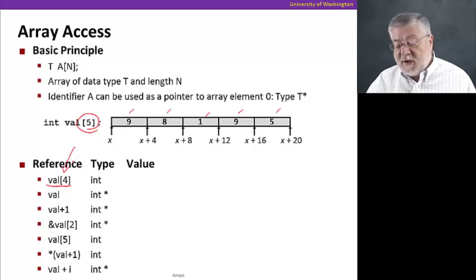Although here we put a five for the total number, the actual index of the last element of the array is N minus one, val sub four. Its type is going to be an int because these are all ints in this array. The value in this case is going to be the number five, that last five that we see at the address x plus 16.